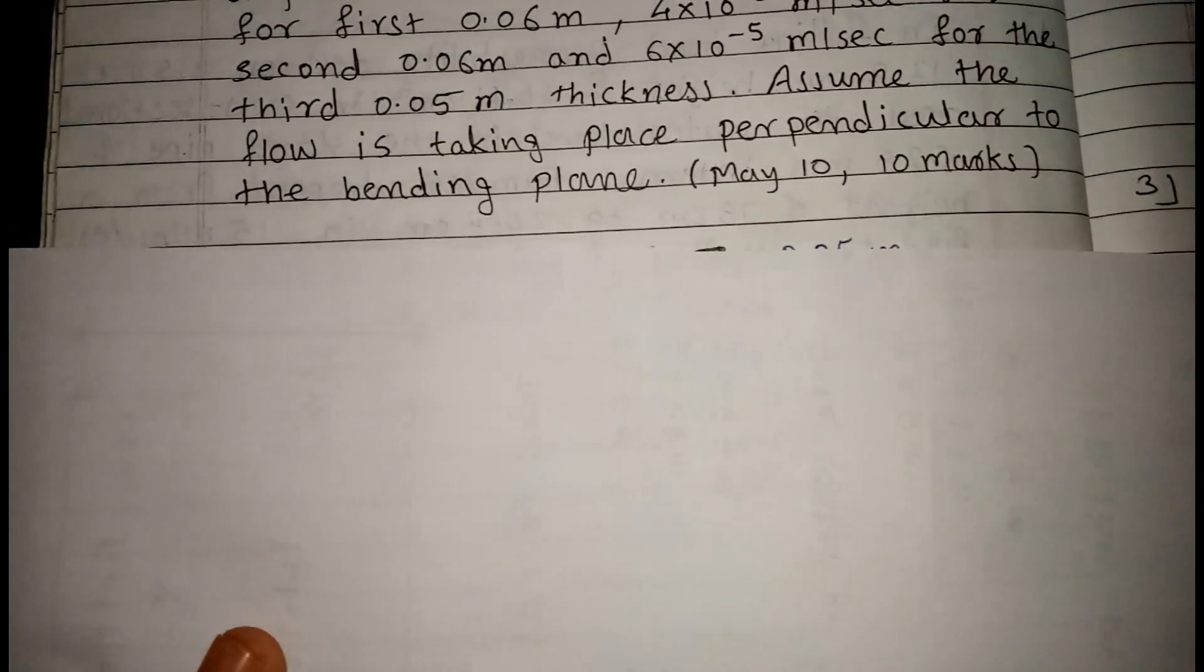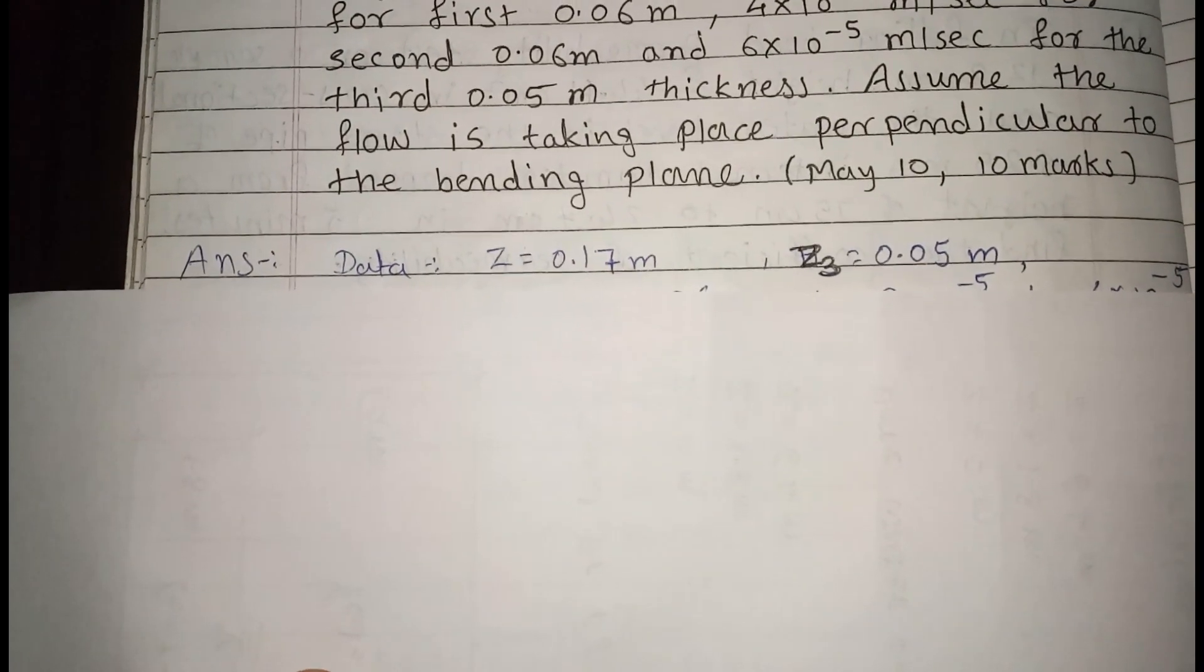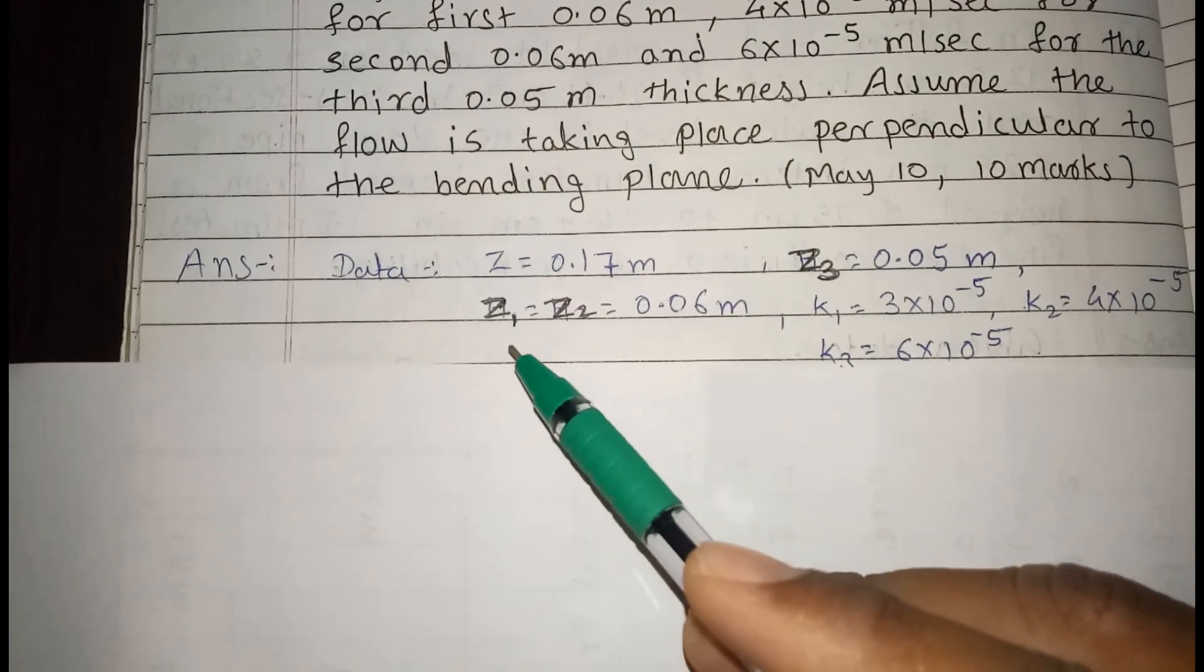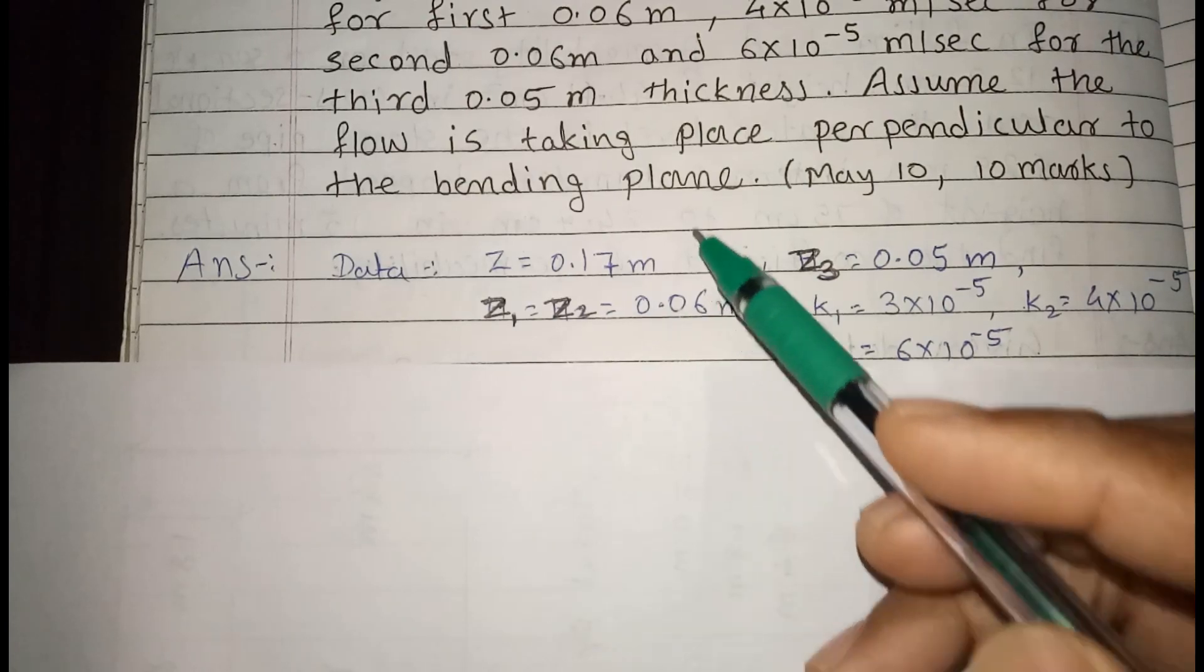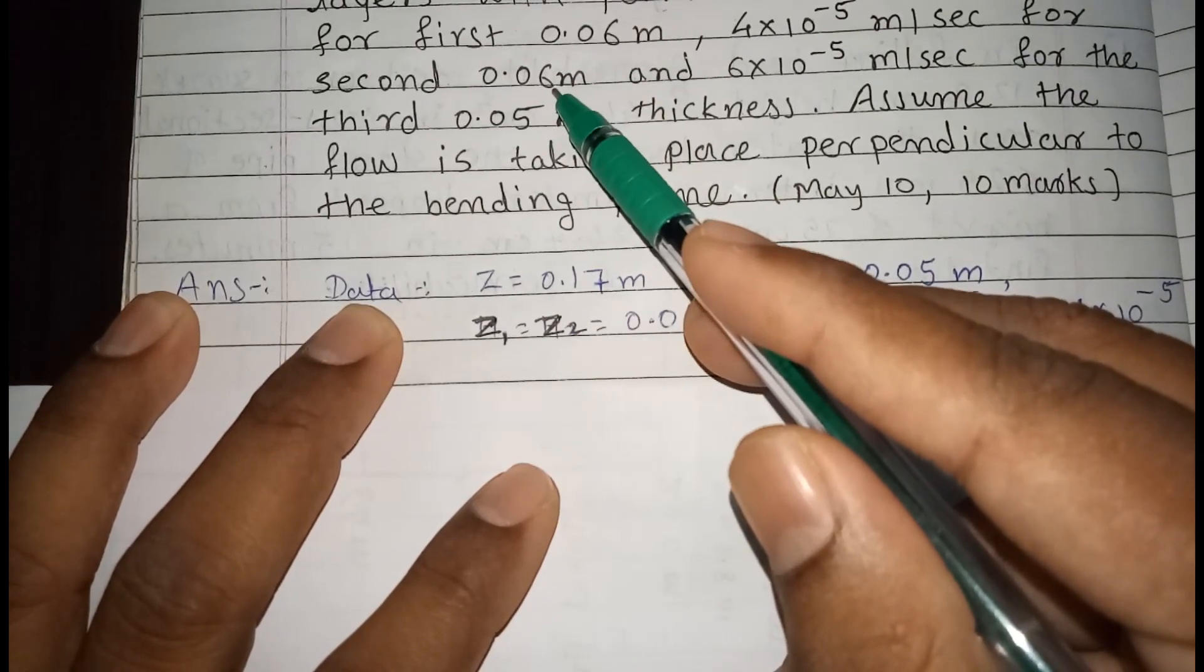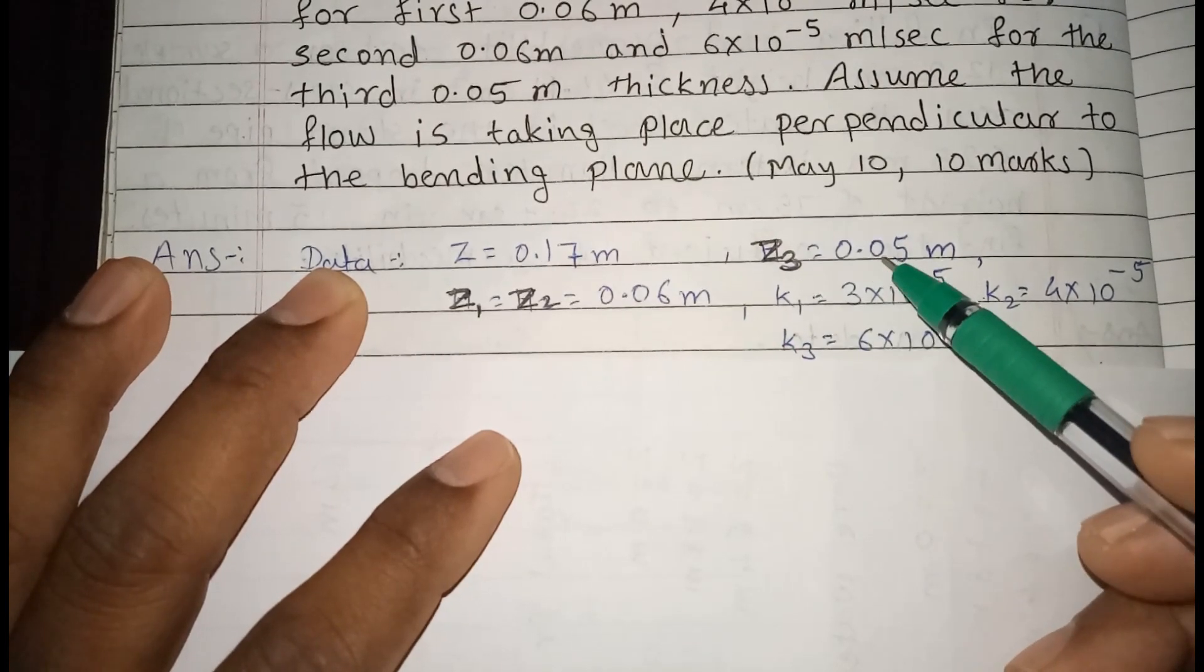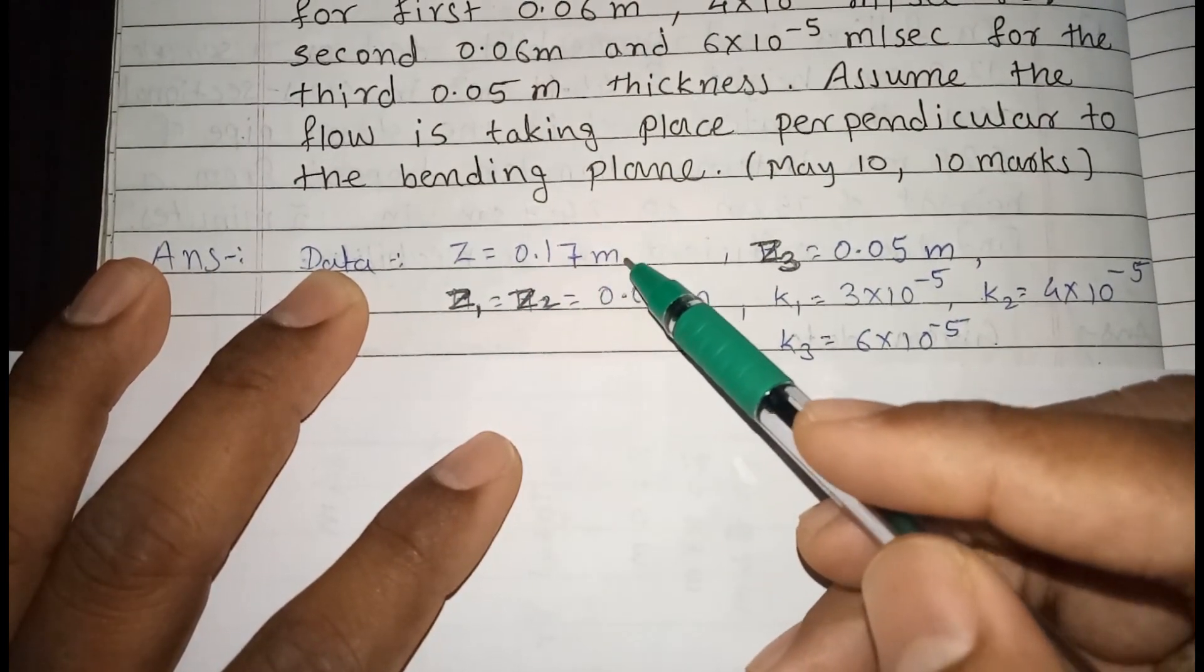First, write down the given data. Z1 is the thickness of first layer. We can see that Z1 and Z2 having same thickness that is 0.06. First layer is 0.06, second layer is also 0.06, and third layer is 0.05. So Z1 and Z2 is same 0.06 meter and Z3 is 0.05 meter. Total thickness that means total Z is 0.17 meter.